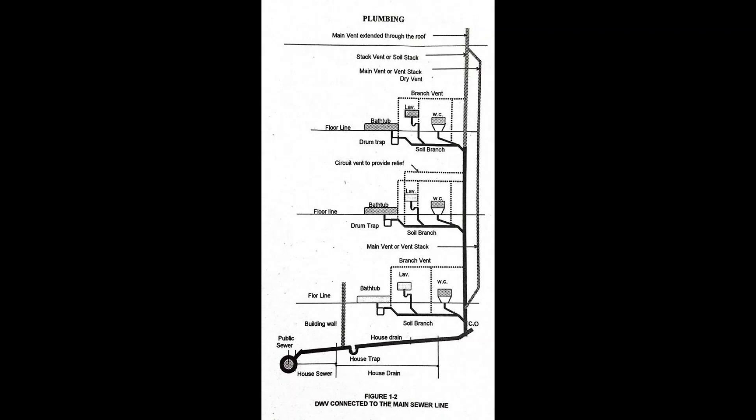Water supply system of a building or premises consists of the water service pipe, the water distributing pipe, and the necessary connecting pipes, fittings, control valves, and all appurtenances in or adjacent to the building or premises.